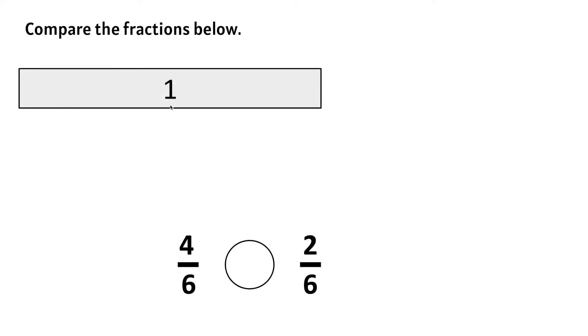We can start by creating a whole. Now let's show 4 sixths: 1 sixth, 2 sixths, 3 sixths, 4 sixths.